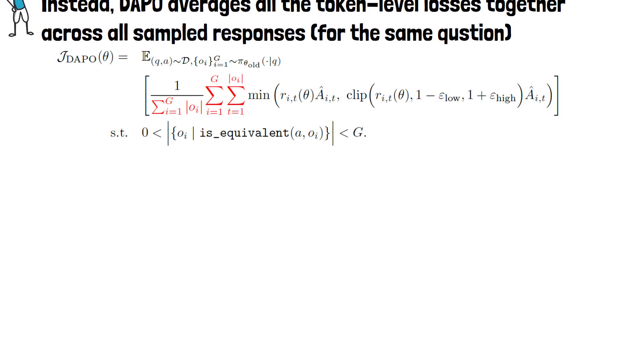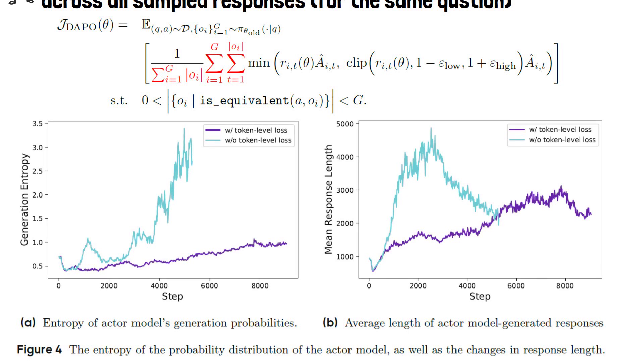The following figure shows how this change impacts training, in purple. On the left, we see it prevents unhealthy increases in entropy, and on the right, we see a gradual increase in response length, comparing to an unhealthy big jump at the start.